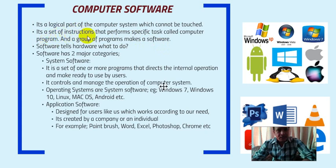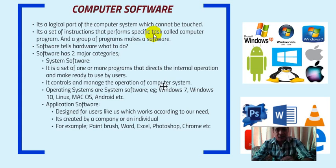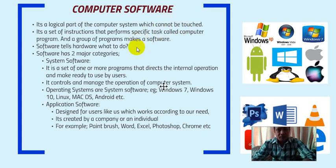Software is a set of instructions that perform a specific task. For example, Paint has some instructions that perform specific tasks like painting, drawing, and coloring only. Microsoft Word has instructions that perform tasks like typing, making text bold, changing letter size, italics, and inserting pictures — only those specific tasks.